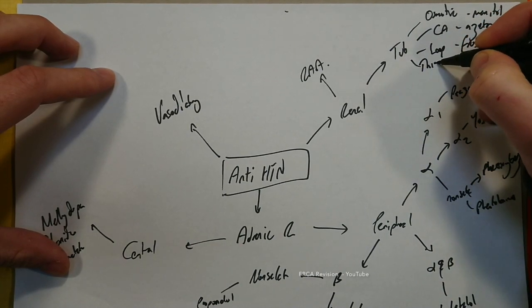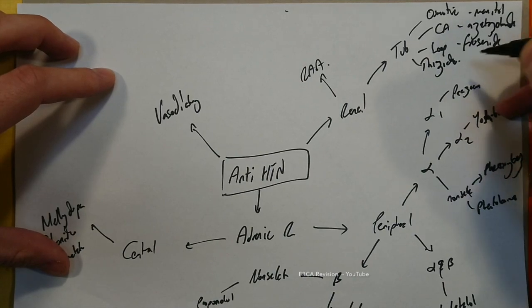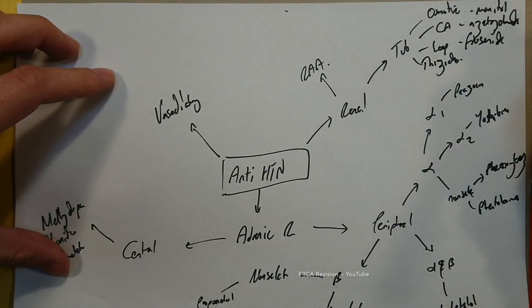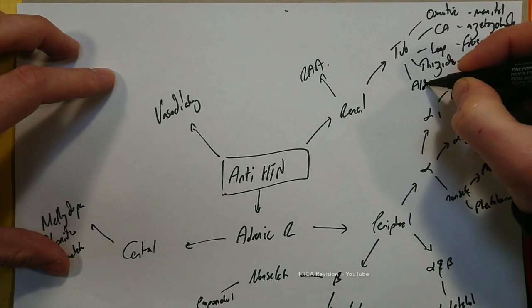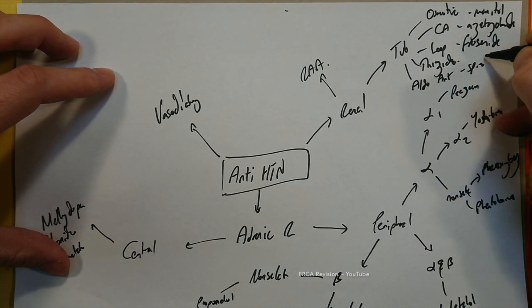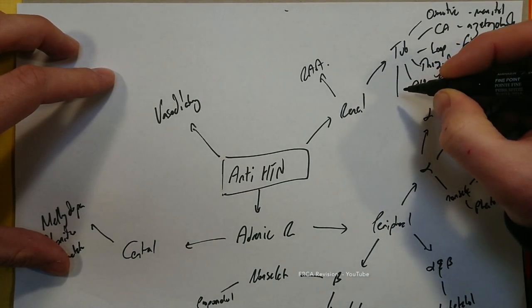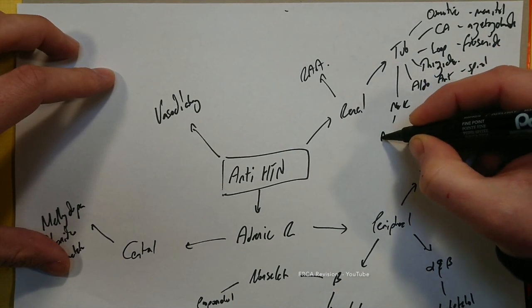Then we can think about the thiazides, which include things like thiazide diuretics. Then we've got the aldosterone antagonists, which is spironolactone. And then we've got the sodium-potassium pump, which is amiloride.